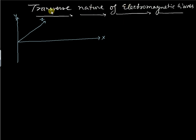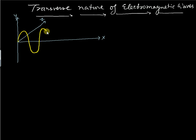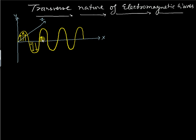In this video section, I will discuss the transverse nature of electromagnetic waves and how to prove it. For example, the electric field component is along the y-direction and the wave propagates in the x-direction. You can see these are the electric field components that vibrate along the y-direction, and this can be written as E as a function of x and t.